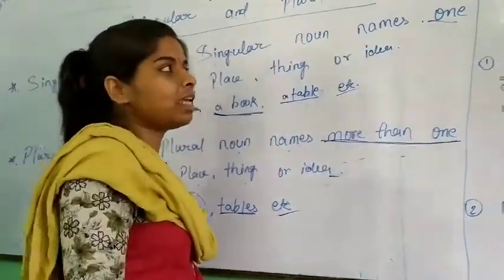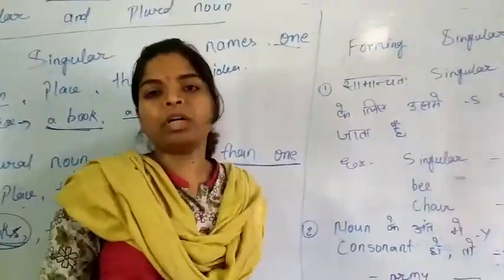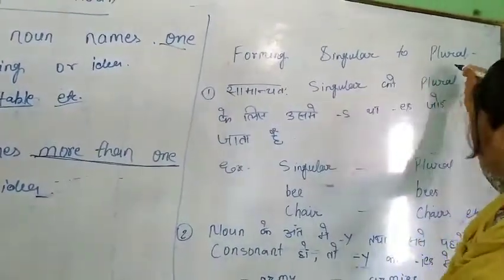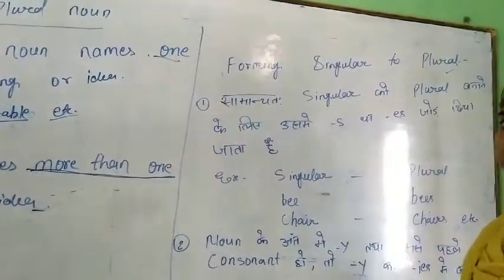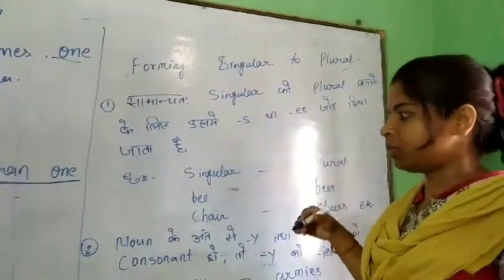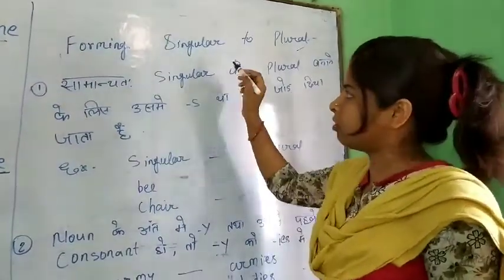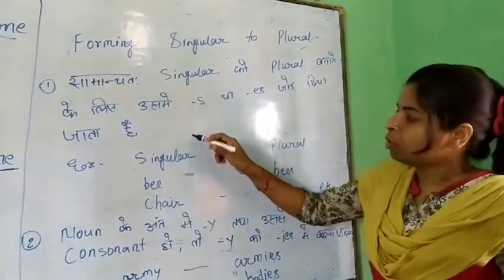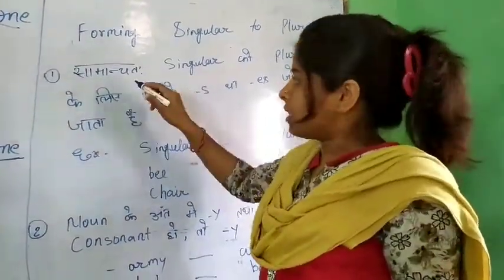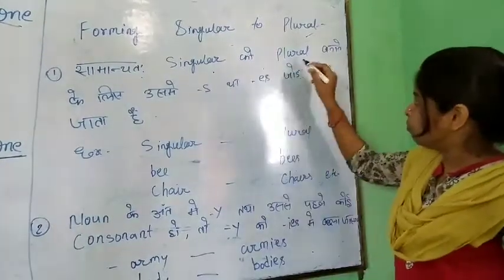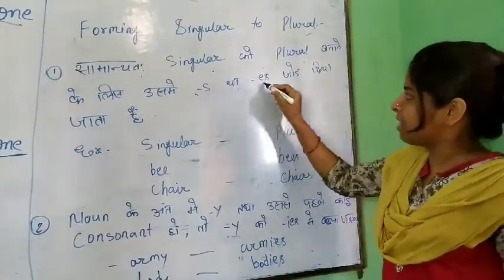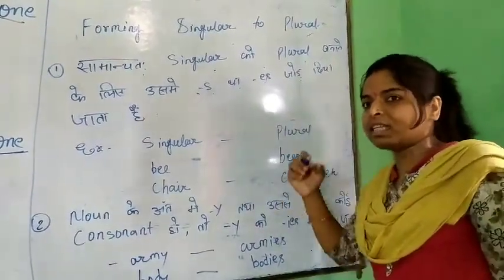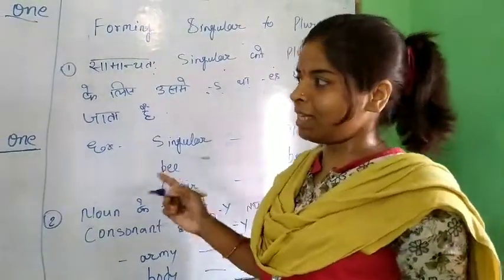Now we will see how to form singular to plural noun. Kisi bhi singular noun ko plural noun mein kaise banayenge. There are some rules for forming singular to plural noun. Generally, the first rule is: samaanya singular ko plural banane ke liye usme 's' ya 'es' joda jata hai. Generally, kisi bhi singular noun ke ant mein 's' ya 'es' add karte hain.